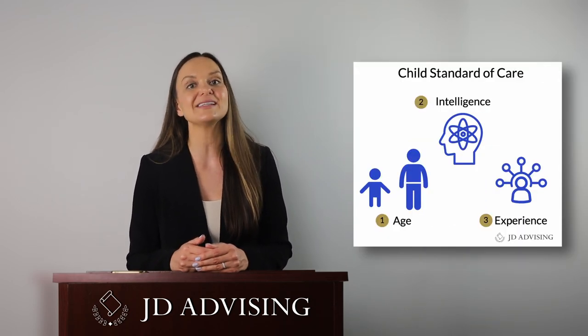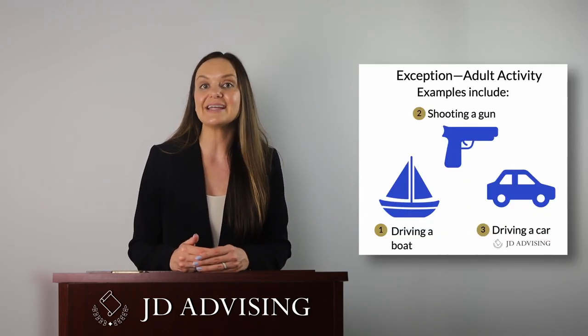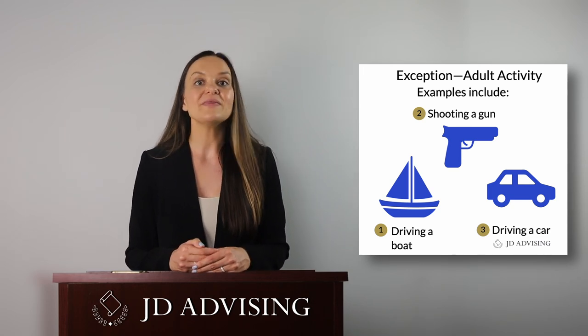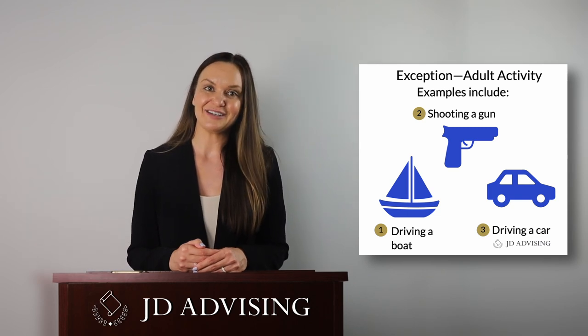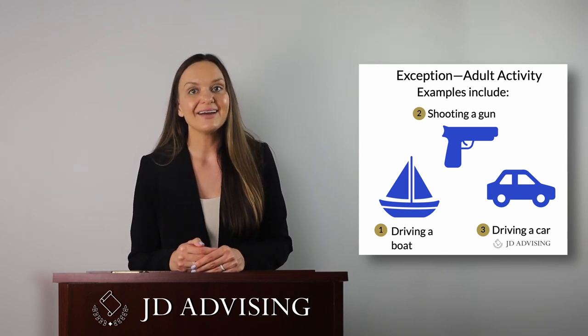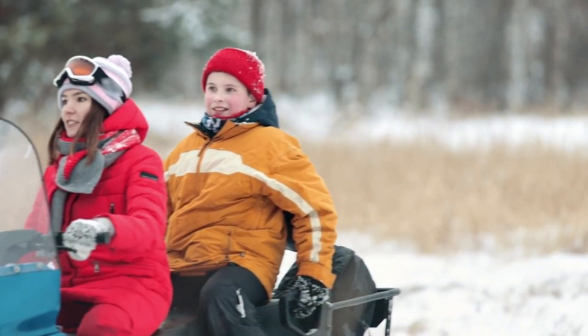The first is children and the duty of care. A child owes the duty of care of a hypothetical child of similar age, intelligence, and experience, acting under similar circumstances. However, an exception to this general rule is when a child is engaged in an adult activity. When this happens, a child is held to the same duty of care as an adult. Examples of adult activities include shooting a gun, driving a boat, or driving a car. On the MEE, they tested this with a child operating a snowmobile — an adult activity — and therefore that child was held to an adult's standard of care.